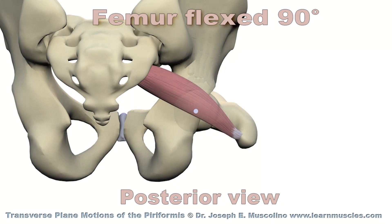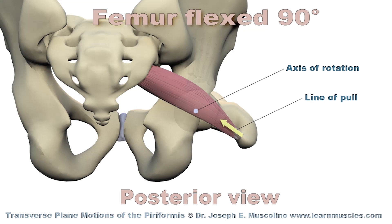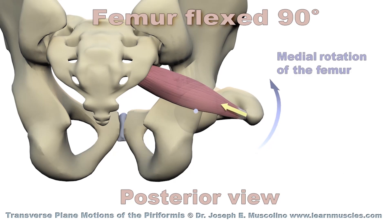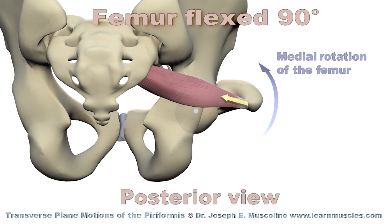The axis of rotation is represented by the white dot and the line of pull by the yellow arrow. Now when the piriformis contracts, it creates medial rotation of the femur.